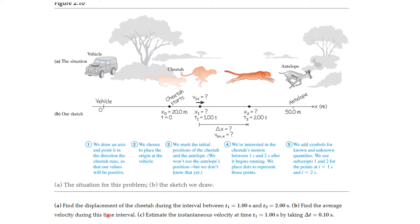Let's look at another example. Let's suppose that we're having a cheetah here, and the cheetah starts at 20 meters per second at time zero, but starts moving faster and faster and faster, and is chasing after this antelope, and the antelope is at 50 meters. So the situation is described here, and we're watching this from our vehicle, and we want to find the displacement that cheetah during the interval between t equal 1 and t equal 2. We want to find the average velocity during that time interval and estimate the instantaneous velocity at time t equal 1 second by taking delta t, the change in t, to be only a tenth of a second.